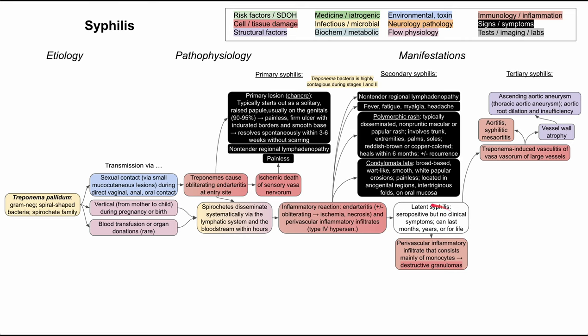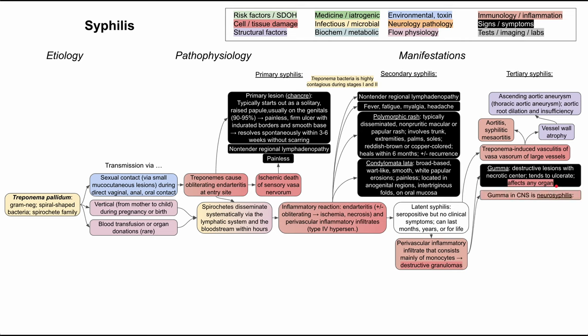In addition, latent syphilis can become reactivated and cause a perivascular inflammatory reaction, essentially creating granulomas distributed throughout the body. Granulomas are pathological findings where you have many monocytes clustered together. These granulomas in various organs are called gummas. They form destructive lesions that tend to necrose and ulcerate, and they can be in any organ. On the skin they're very visible — you can see their necrotic centers and ulcerations — but they can also affect the central nervous system.